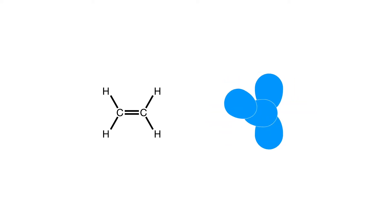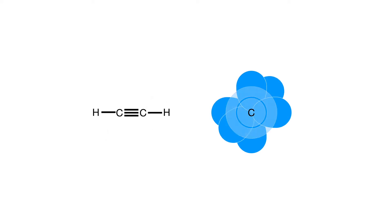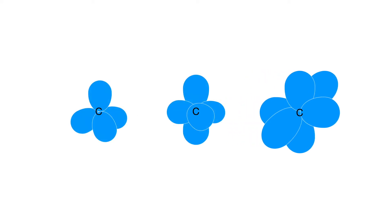Last but not least, in the case of triple bonds, we only use one of the p orbitals, and we call this hybridization sp. Now, let's move on to the new content.